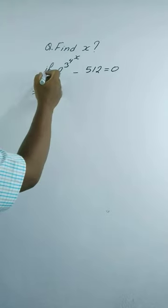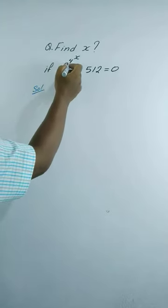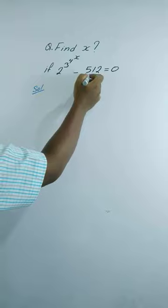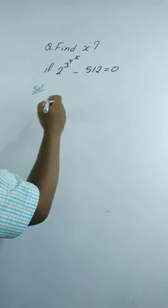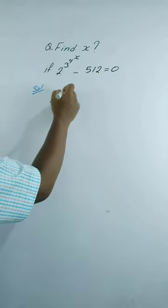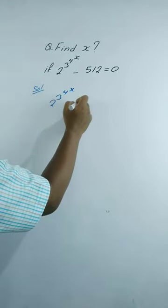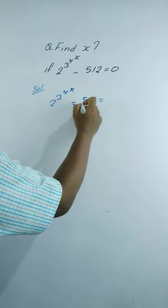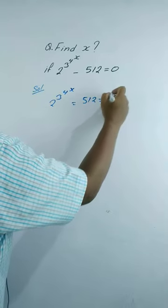Find x if 2 to the power 3 to the power 4 to the power x minus 512 equals to 0. The solution: 2 to the power 3 to the power 4 to the power x equals to 512. We can write 512 as 2 to the power 9.